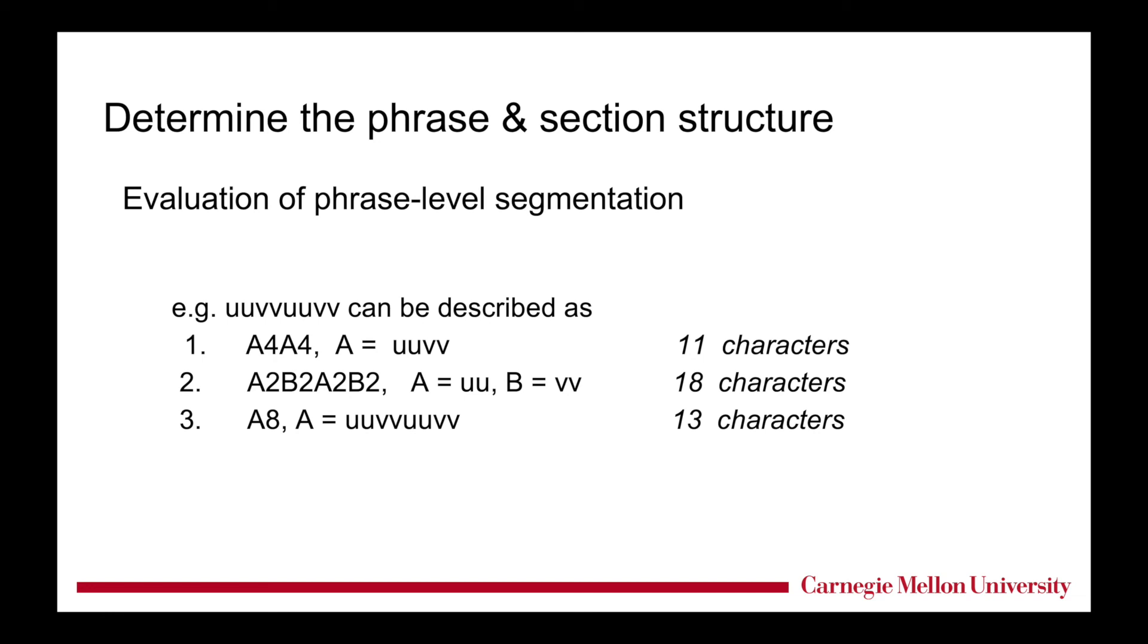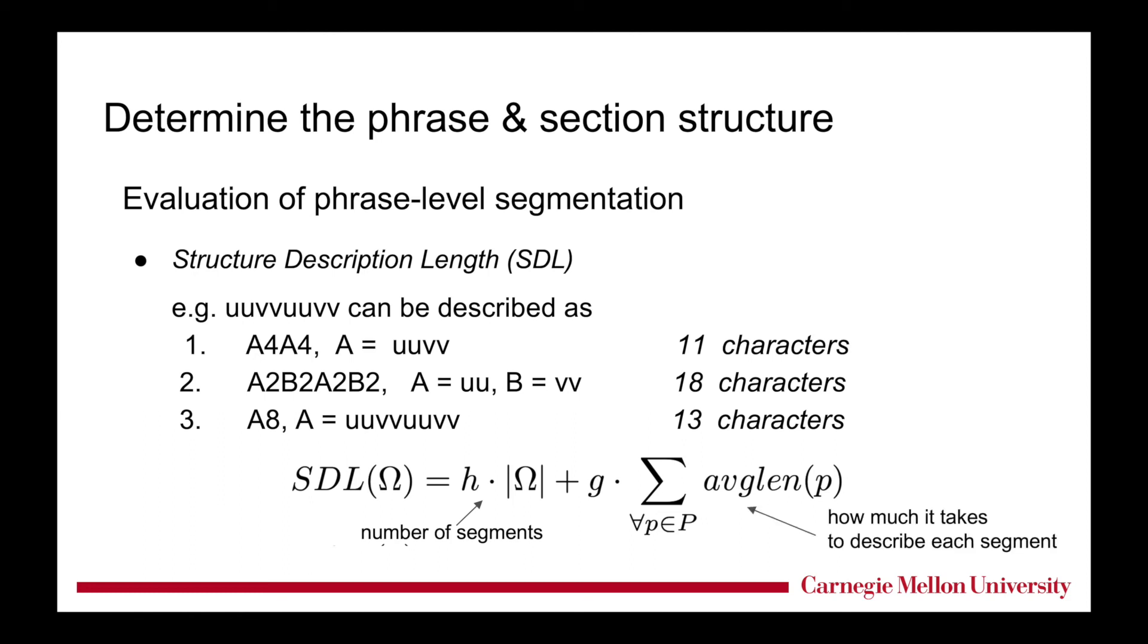If we just count characters, we can see the first description is the shortest. So we formalize this idea as the structure description length, which is a weighted sum of number of segments and how much it takes to describe each segment. We believe that the structure with the lowest SDL is the most reasonable one. We look at every possible structure segment and pick up the one with the lowest SDL.